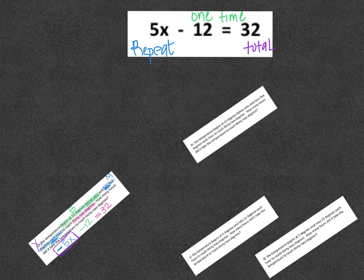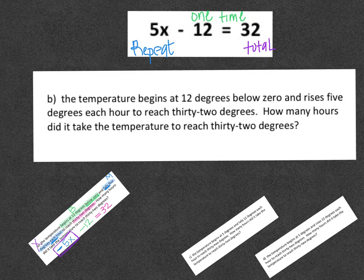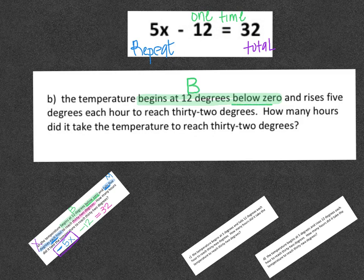I'm going to look at scenario B. This story problem says the temperature begins at 12 degrees below zero and rises 5 degrees each hour to reach 32 degrees. How many hours did it take the temperature to reach 32 degrees? Reading through this just like last time, we have begins at 12 degrees below zero. So that tells me this is going to be the B. And it says below zero, so that means negative.